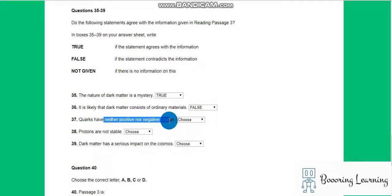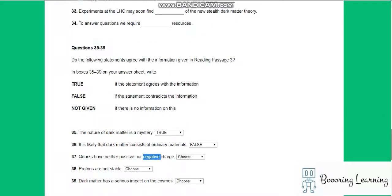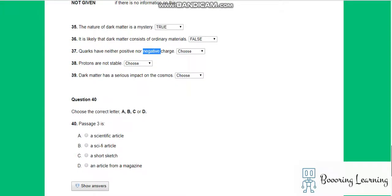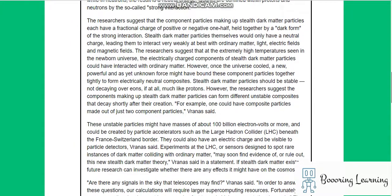Question 37: Quarks have neither positive or negative charge. The keyword that we have to search is positive or negative. It is easy if you're reading physics-related text because they can't paraphrase quarks for positive or negative. But this is not very easy compared to others—have neither positive or negative charge.